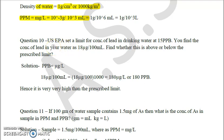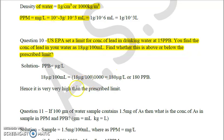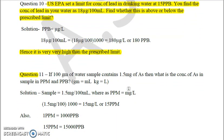Suppose the US EPA sets a limit of concentration of lead in drinking water at 15 ppb, and you find the concentration in your water is 18 microgram per 100 mL. We need to find whether this is above or below the prescribed limit. Since ppb is microgram per liter, we convert: 18 microgram per 100 mL becomes 180 microgram per liter, which is 180 ppb. The given limit was 15 ppb, so it is quite high — exceeding the limit by 165 ppb.